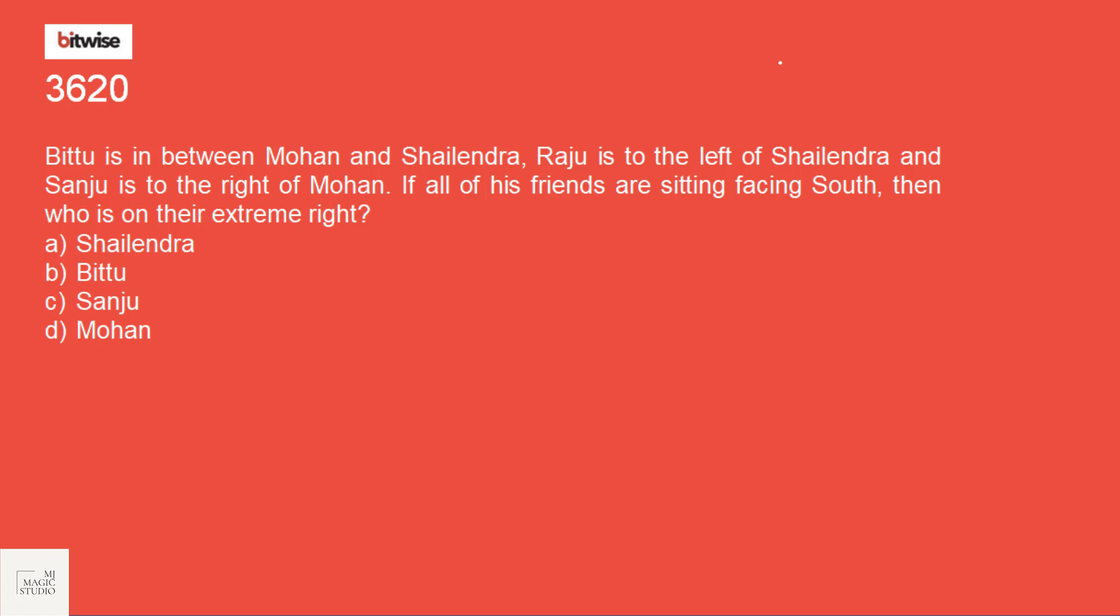Okay, one more example from sitting arrangements. Bittu is in between Mohan and Salindra. Raju is to the left of Salindra and Sanju is to the right of Mohan. If all of his friends are sitting facing south, but we are always convenient when we are arranging people in the north. And let me make this as north. Then Bittu is between Mohan and Salindra. Raju is to the left. No, it will become right. And Sanju is to the right. And Sanju is to the left. Then who is on the extreme right? Who is on the extreme left?